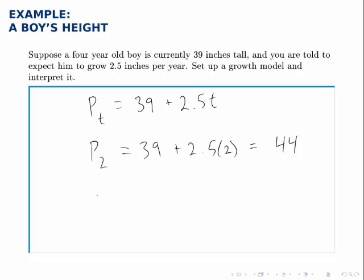But what if we predicted until he was 50 years old? We'll predict his height at t equals 46, 46 years after he's four years old. Plugging in 46 for t, this model predicts that this boy will be 154 inches tall by the time he's 50, which is almost 13 feet tall. Of course, that's nonsense. The point is that this linear model doesn't continue to hold true throughout his entire life.